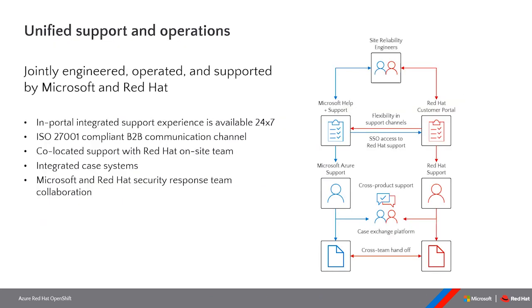From a support and operations perspective, Microsoft and Red Hat work closely together with unified support — essentially a single virtual team of site reliability engineers. When you have a problem with your ARO cluster, you use one channel to raise that concern, either through the Red Hat portal or the Microsoft Azure support channel. It gets triaged and communicated between both teams, routing to the right team — if it's an underlying platform issue it goes to Microsoft; if it's about OpenShift internals, the base OS, or middleware it goes to Red Hat. We have access to each other's support systems through single sign-on.